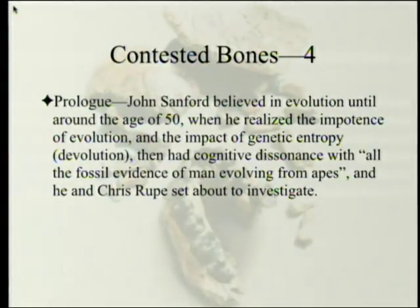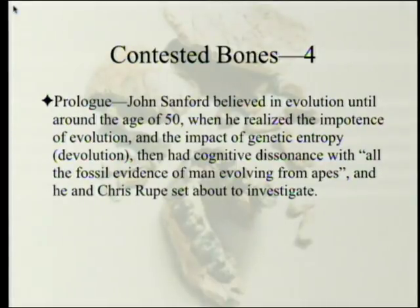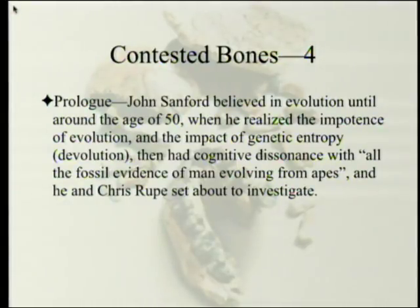What we've covered so far is the prologue and three chapters. The prologue outlines how John Sanford, the second author, believed in evolution until around the age of 50, when he realized the impotence of evolution to get from amoeba to man, and the impact of genetic entropy — what you might call devolution. Not only that, but species shouldn't last for millions of years. He became a short-age creationist but then had cognitive dissonance with, quote, all the fossil evidence of man evolving from apes, end quote. He and one of his protégés, Chris Roop, set out to investigate.